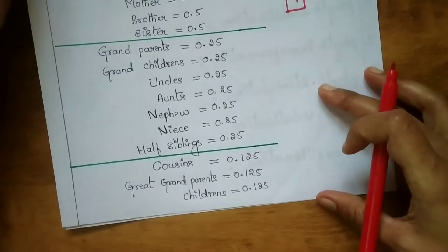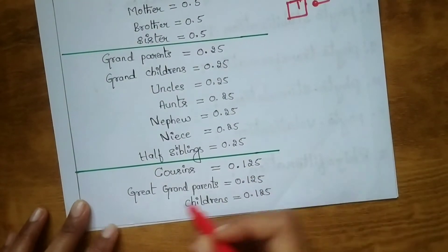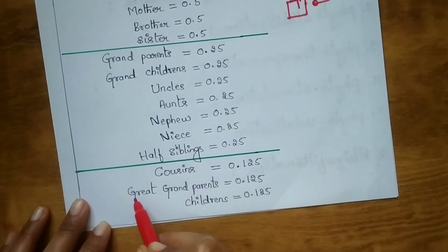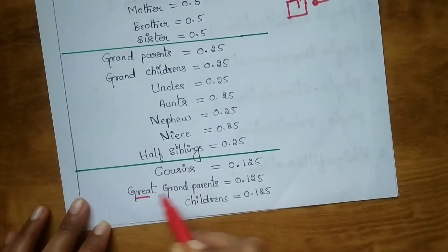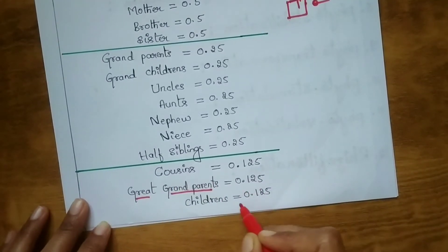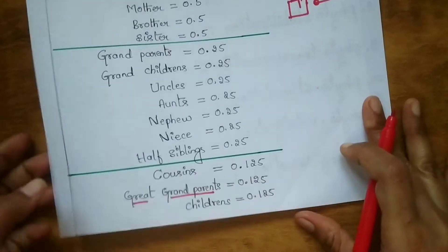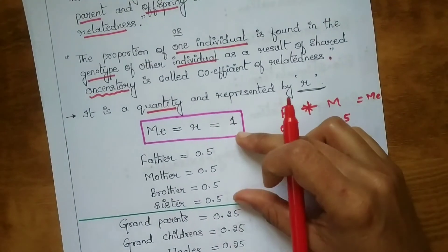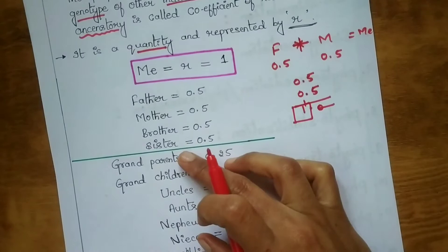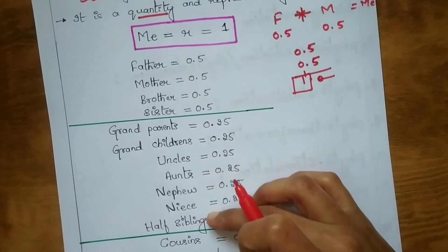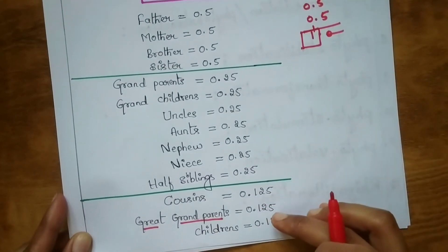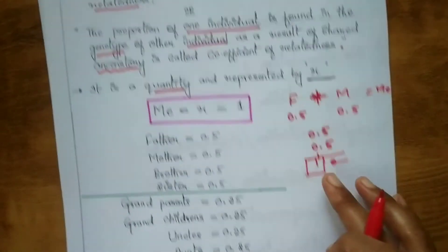Cousins are related by 0.125. Great-grandparents — meaning your parents' parents' parents — are 0.125, and their children (great-grandchildren) are also 0.125. To summarize: parents, brothers, sisters are 0.5; grandparents, grandchildren, uncles, aunts, nephews, nieces, and half-siblings are 0.25; cousins and great-grandparents are 0.125.